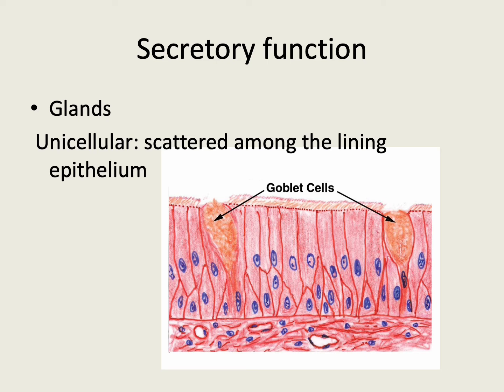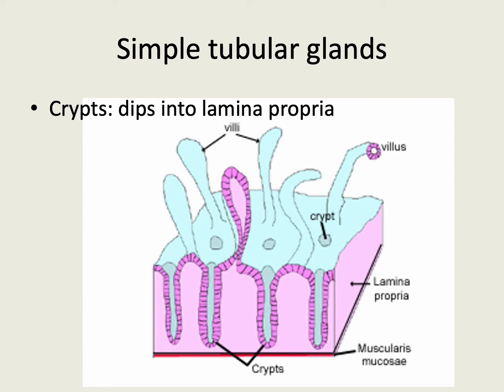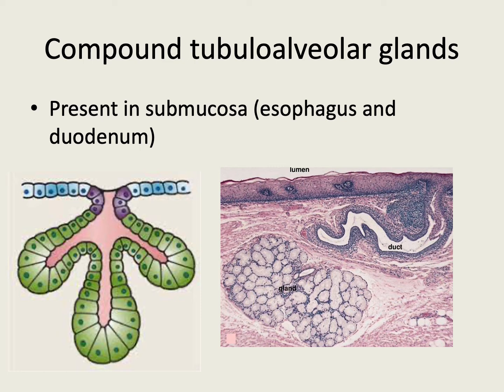The epithelium of the gut also performs a very important secretory function. The secretory cells are arranged in the form of numerous glands. Some of these glands are unicellular glands — they are the goblet cells — with secretory cells scattered among the cells of the lining epithelium. In some organs, the epithelium dips into the lamina propria to form simple tubular glands. In some parts such as the esophagus and duodenum, compound tubulo-alveolar glands are seen in the submucosa.